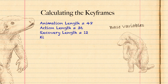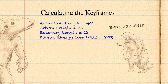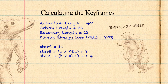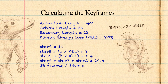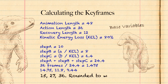To add a little realism, I'm also going to add some kinetic energy loss at an arbitrary value of 80%. I'm going to pick a starting keyframe value of 10 because it's easy to multiply or divide by. Then 80% of that is 8, and 80% of that is 6.4. We add up all those steps to get 24.4, then divide the action length of 36 frames by 24.4 to get the ratio 1.475, which we use to multiply each step value. Rounding up, we end up with key frames on frame 15, frame 27, and frame 36.